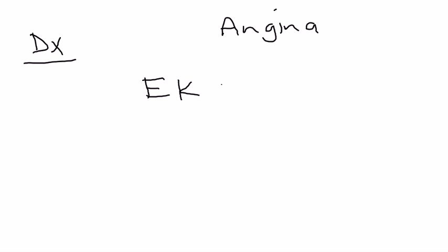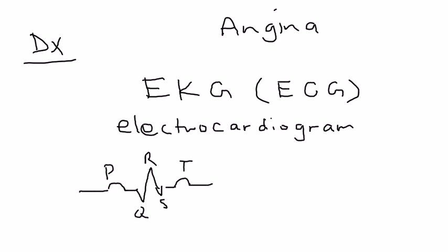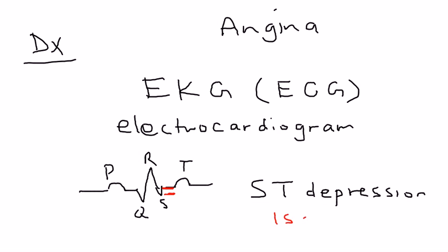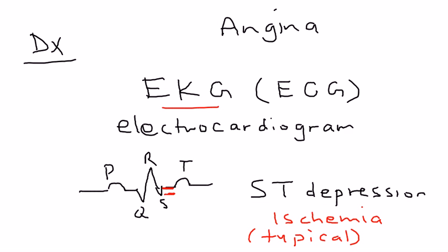If you have a patient and you're pretty sure they've got cardiac-related chest pain — angina — how would you diagnose it? The very first test you would do is an EKG, also written as ECG, or electrocardiogram. The key finding to look for is ST segment depression. The ST segment will be depressed — lower than normal — and that is related to ischemia. That is by far the most typical EKG finding when you have ischemia of the heart muscle.